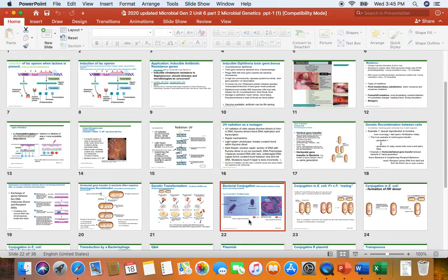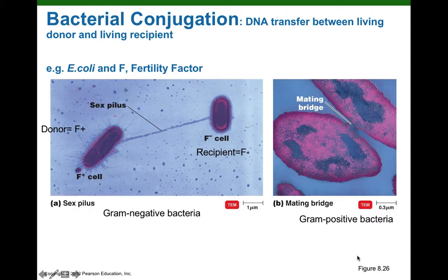What we're going to do next is conjugation. Conjugation is the only type of horizontal gene transfer in which the donor bacterium is actually alive. In gram-negative bacteria, if they carry a special DNA sequence that encodes the genes to carry out conjugation, then the bacteria can act as a donor.